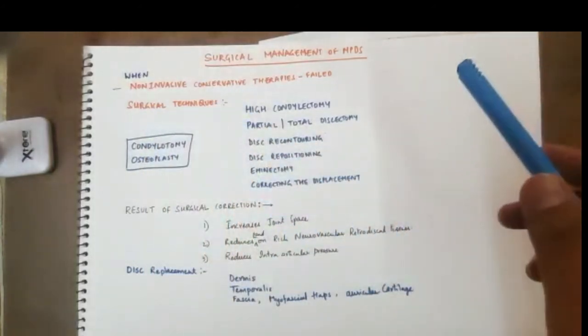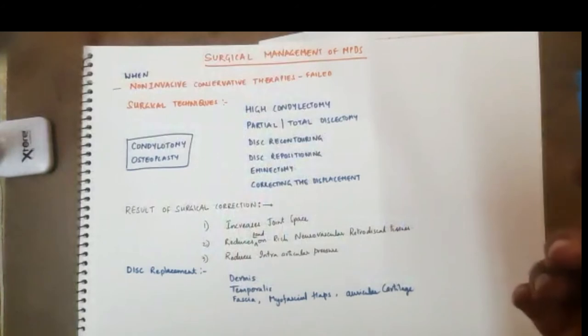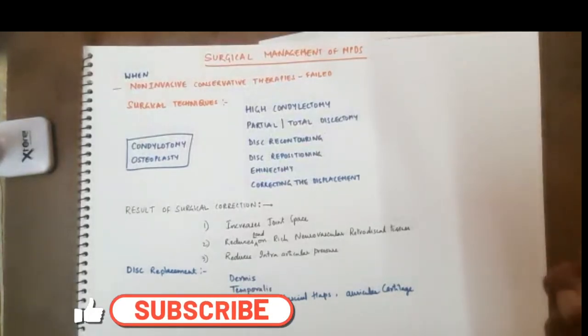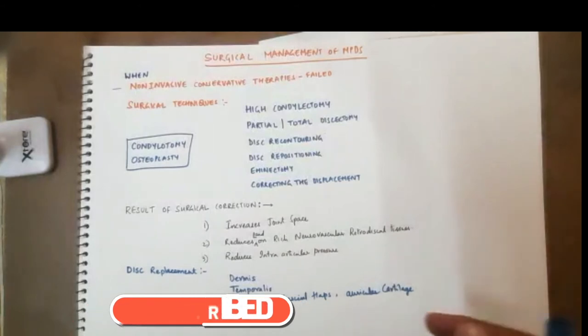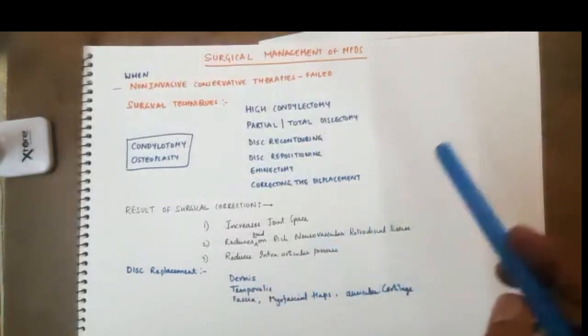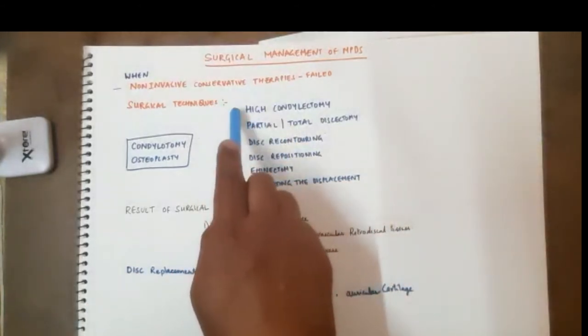See, basically, the condyle, disc, and the eminence, these three are the things which cause TMJ pain, right, MPDS. The muscles may be in a hyper excited state, or they are pulling the disc out, or lateral pterygoid is overacting, or your occlusion is not stable. Once you correct all that, the final problem ends up in the condyle.